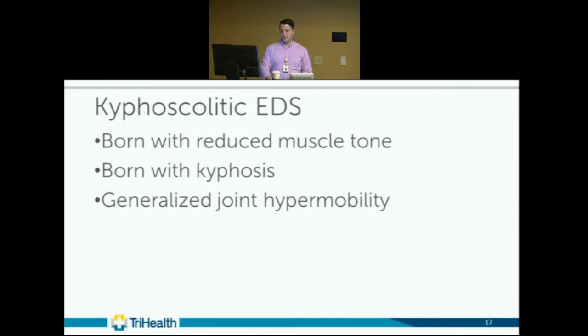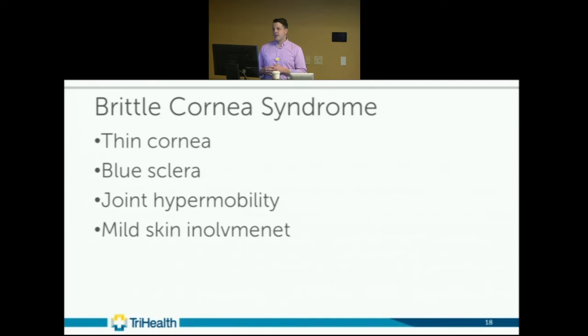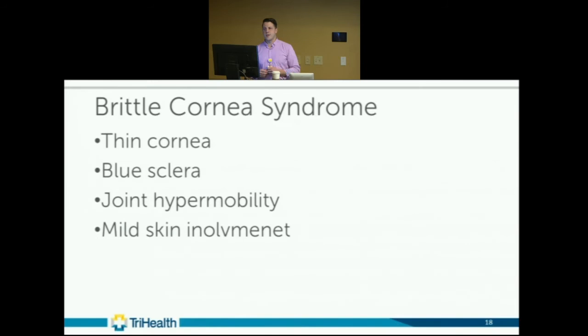Brittle cornea syndrome features thin corneas, blue sclera — overlapping here with Marfan syndrome — joint hypermobility, mild skin involvement, and a risk of spontaneous corneal rupture leading to blindness or severe vision loss.